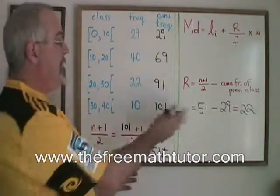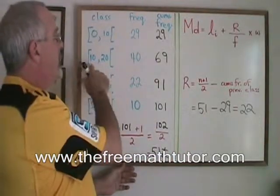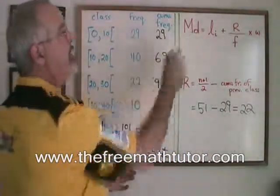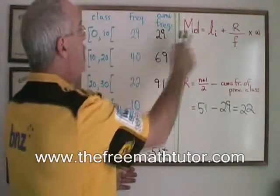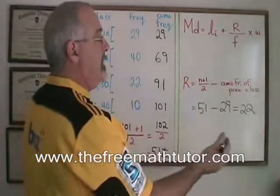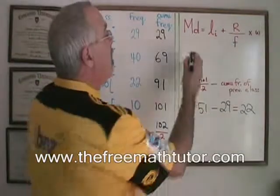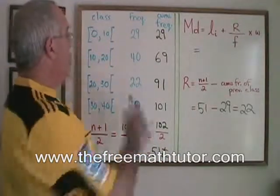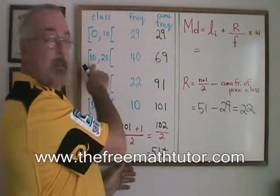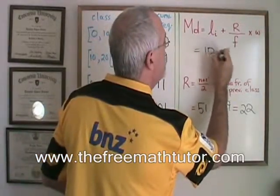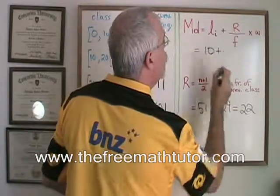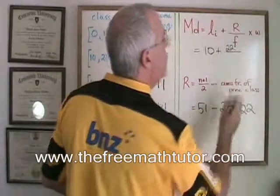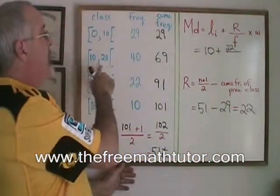Now finally, since we have this information, we know what our median class is and we know the rank of our median within that class, we have enough information to fill in our median formula. This formula is only used for class data and it's very easy to use once we have done this work to set it up. Median is equal to L sub i is the lower limit of the median class. Since this is our median class, its lower limit is 10. So we replace our L sub i with 10. The rank is this 22 that we found before. And the frequency is the frequency of the median class, which is this 40.